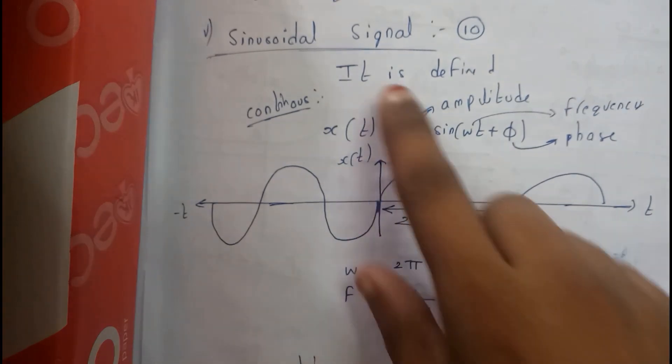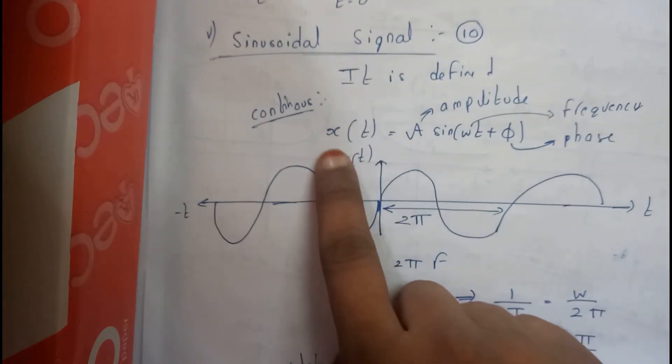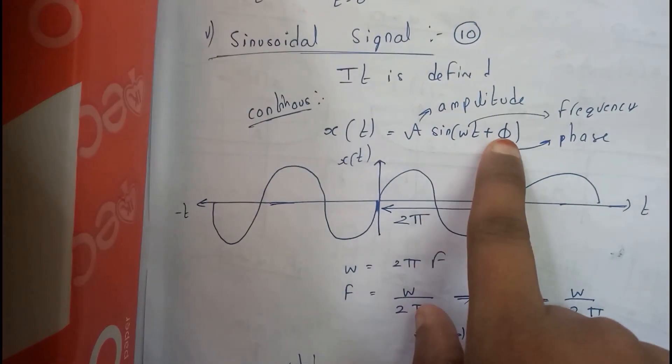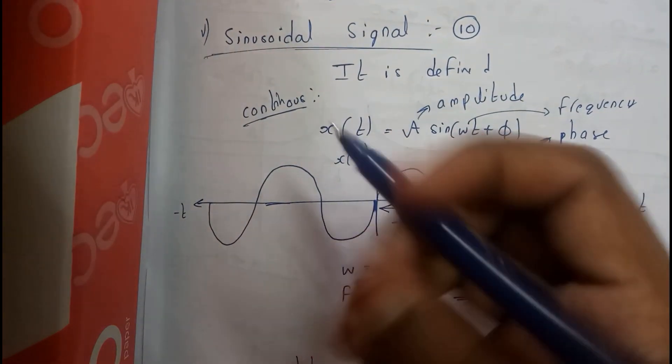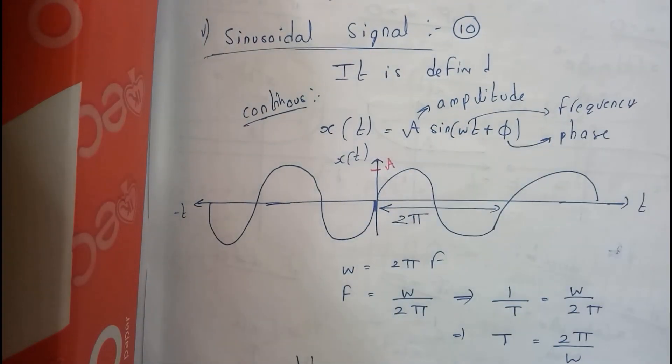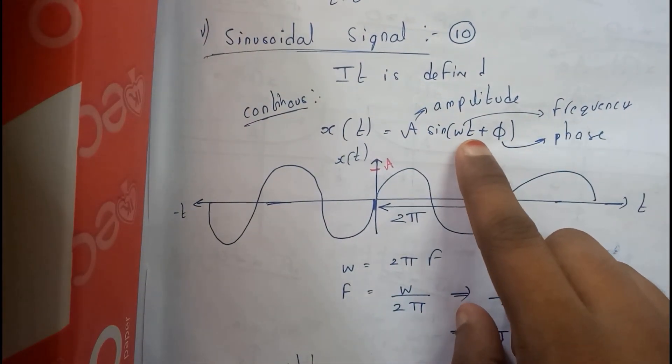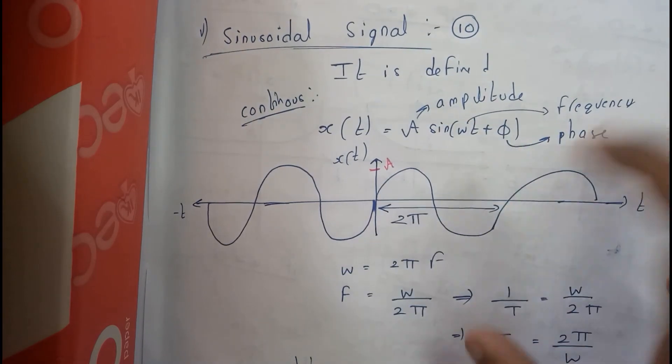So sinusoidal signal. It is defined as in continuous: x of t equals A sin omega t plus phi, where A is the amplitude. I think I didn't write here. So this will be the amplitude, sine omega t plus phi. Phi will be the phase difference.